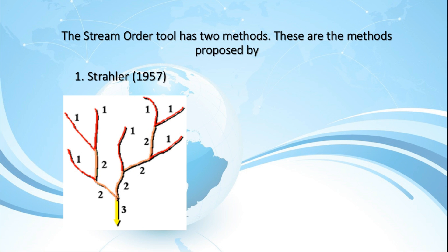The intersection of two links of different orders, however, will not result in an increase in order. For example, the intersection of a first-order and second-order link will not create a third-order link, but will retain the order of the highest-ordered link.